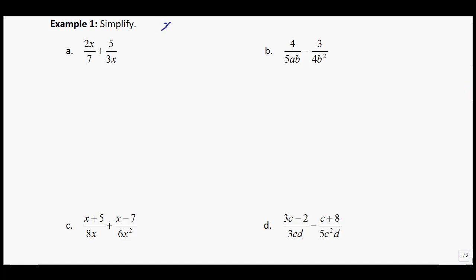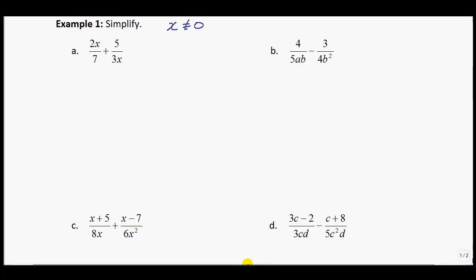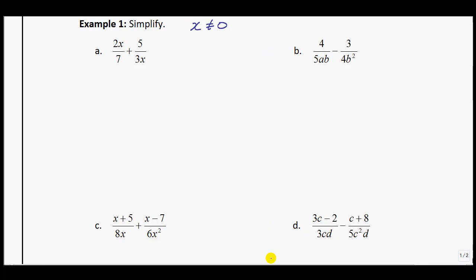So I will do that right here. Notice for this one that I have x cannot equal 0 with the 3x. From this stage, I'm going to try and figure out what my LCD is. I'll do this over on the side here. Your lowest common denominator—what's a number that 7 and 3x go into? They both go into 21x. So when I simplify these, I'm going to write each one over 21x to start.